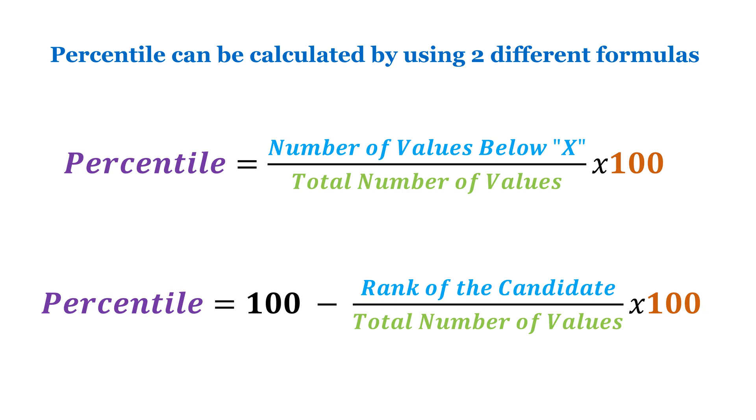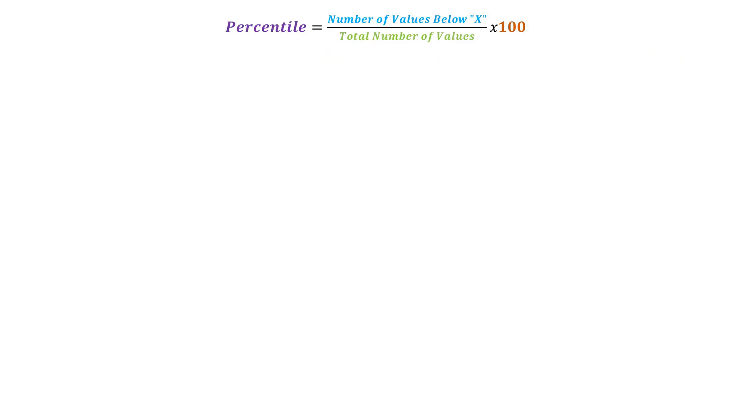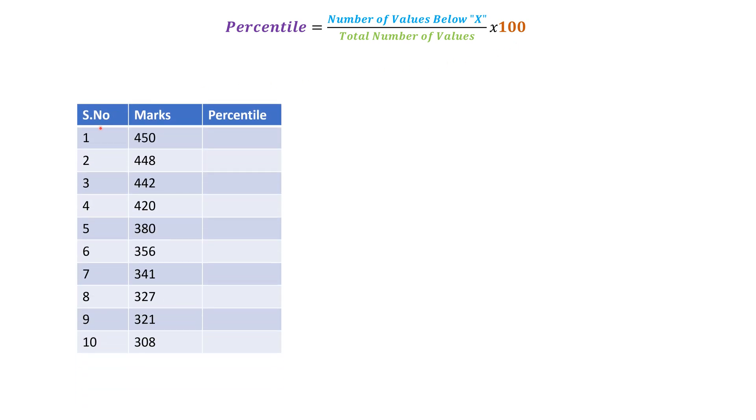Let us see the first formula: percentile equals number of values below X divided by total number of values into 100. For this demonstration, I am using a small set of data where 10 candidates have appeared this examination and these are the marks which are arranged in descending order.